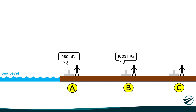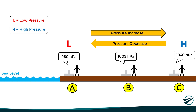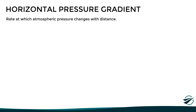We can easily say that point A is an area of relatively low pressure, identified with the letter L, while point C is an area of high pressure, identified with the letter H. Moving from point C towards point A, even though we remain at the same level, we will experience a decrease in pressure, and vice versa. The rate at which pressure changes with distance is described by the horizontal pressure gradient, which is basically the rate at which atmospheric pressure changes with distance.